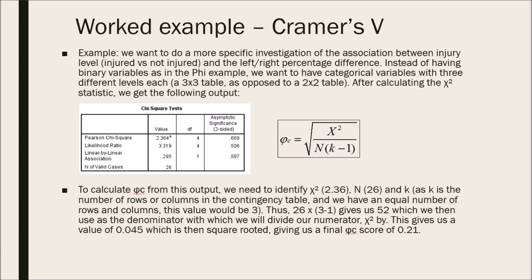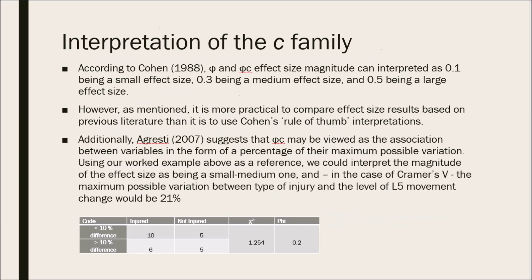Now moving on to the interpretation of categorical effect sizes. According to Cohen in 1988, Phi and Cramer's V effect size magnitude can be interpreted as 0.1 being a small effect size, 0.3 being a medium effect size, and 0.5 being a large effect size. As I said earlier, Phi and Cramer's V are similar to the r and r-squared, so the same levels of interpretation will be used.